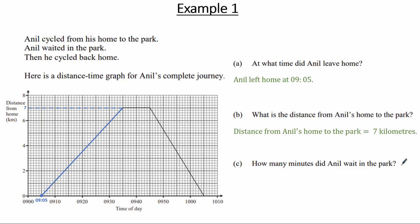In part C, how many minutes did Anil wait in the park? When Anil is waiting in the park he's stationary, so this flat stage of the graph corresponds to that period. He starts waiting from a point between 0930 and 0940, therefore at 0935, and he waits until a point between 0940 and 0950, therefore 0945. So Anil waited in the park for 10 minutes.